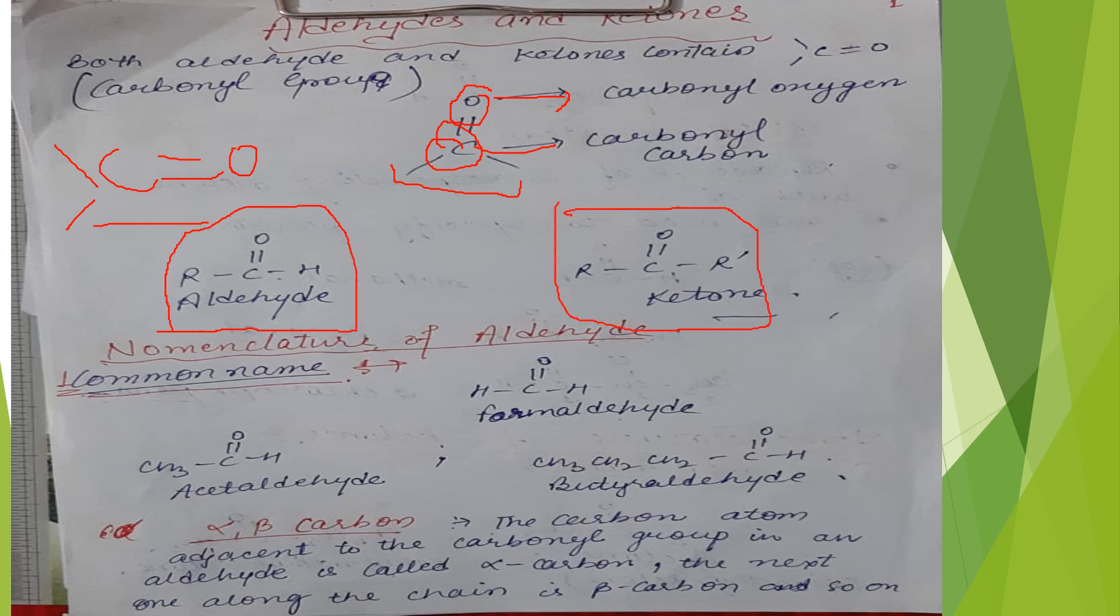In aldehydes you have hydrogen on one side, and in ketones you have alkyl groups on both sides. They might be different or they may be the same.